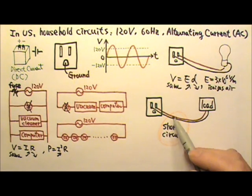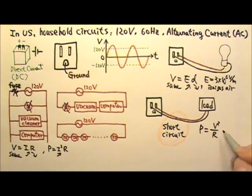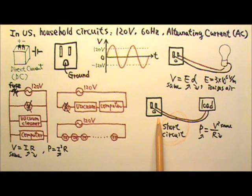A short circuit causes the resistance in the loop to drop really low. P equals to V squared over R. For the same 120 volts, the very low resistance means very high power consumption. The wires can get really hot and may start a fire.